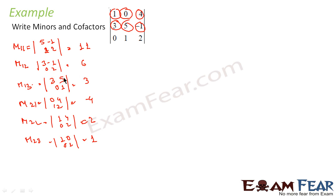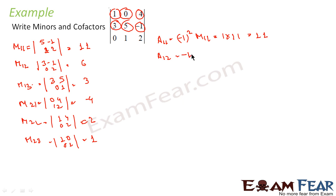Now let me find the cofactors. Cofactor A11 is (-1)^(1+1) into M11, which is 1 into 11 = 11. Similarly A12 is (-1)^(1+2) into M12, which is minus of M12 = -6. Similarly cofactor A13 is (-1)^(1+3) into M13, which is 1 into M13 = 3.